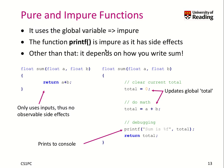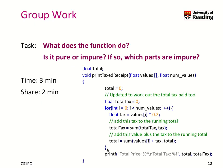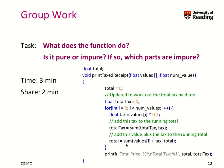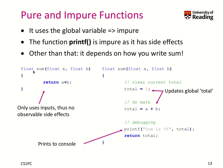First of all, what we realize is that this function uses total, which is a global variable. So in that sense, it already violates our idea of a pure function — it is impure. Also, printf is impure as it has side effects by printing to the terminal. And lastly, it depends on how we write the sum function. On the left-hand side, we see an implementation of sum where we only add the two arguments together. This is a pure function — it has no side effects, only depends on the input, and always gives the same output for the same input.